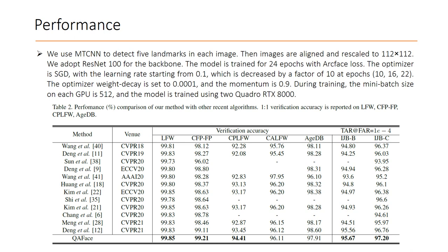We use MT-CNN to detect five landmarks in each image. Then, images are aligned and re-scaled to 112 by 112. We use ResNet-100 for the backbone. This table shows the performance of our model in comparison with other state-of-the-art methods.